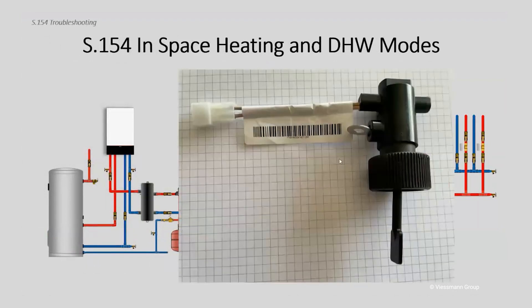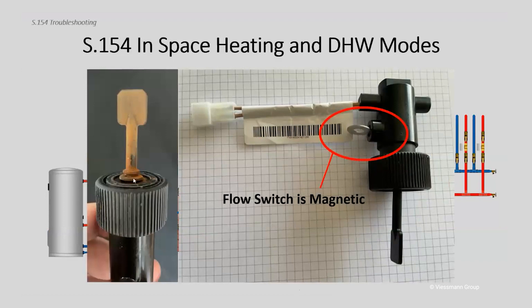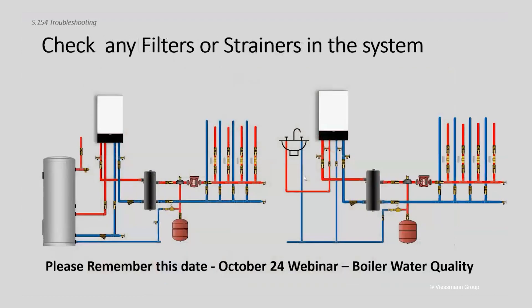I'd also recommend looking at the flow switch itself. Notice this little picture — I put a metal washer up against the paddle of the flow switch here. It's actually a magnet, not a spring, that pulls the paddle back to its default position after pump flow stops. This is magnetic. If you open up the flow switch, this one here came back for inspection and had a lot of buildup of debris on the paddle, which effectively stuck the flow switch in the open position. The flow wouldn't push the paddle closed anymore because it was all junked up.